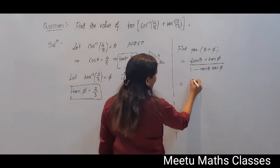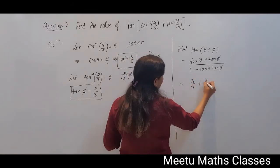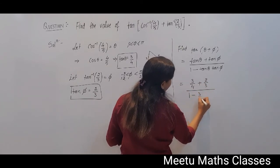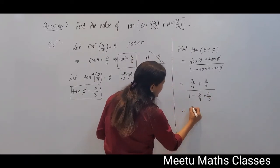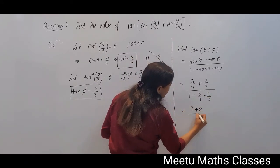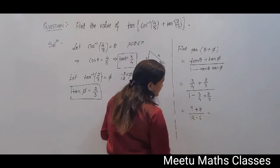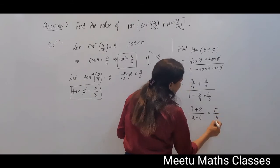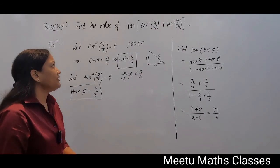Tan theta is 3 by 4 plus tan phi is 2 by 3, divided by 1 minus 3 by 4 multiplied by 2 by 3. And that equals 9 plus 8 upon 12 minus 6, that is 17 by 6. And this is the required value of your expression.